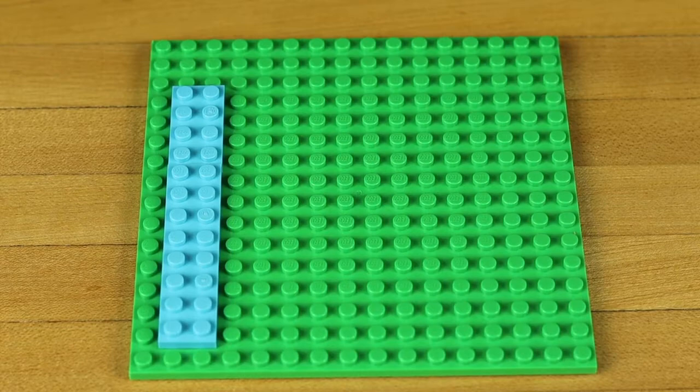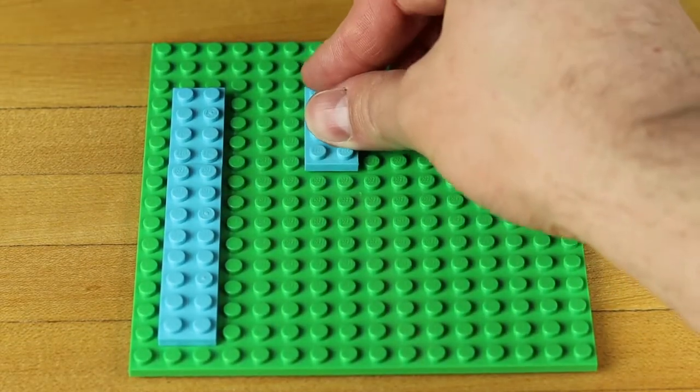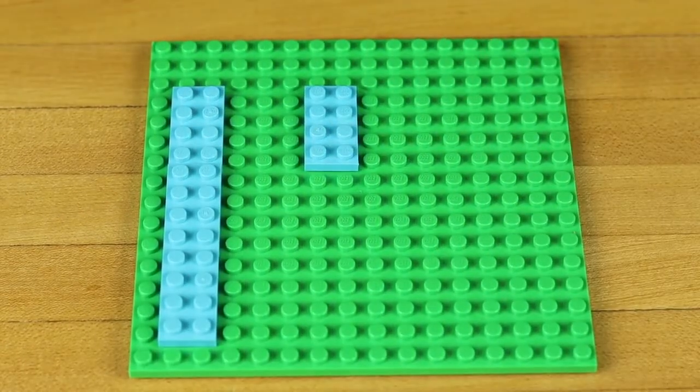First, you'll want to build a platform for your robotics board to hang out on. Use some 2x4 or 1x4 Lego plates to make this platform.